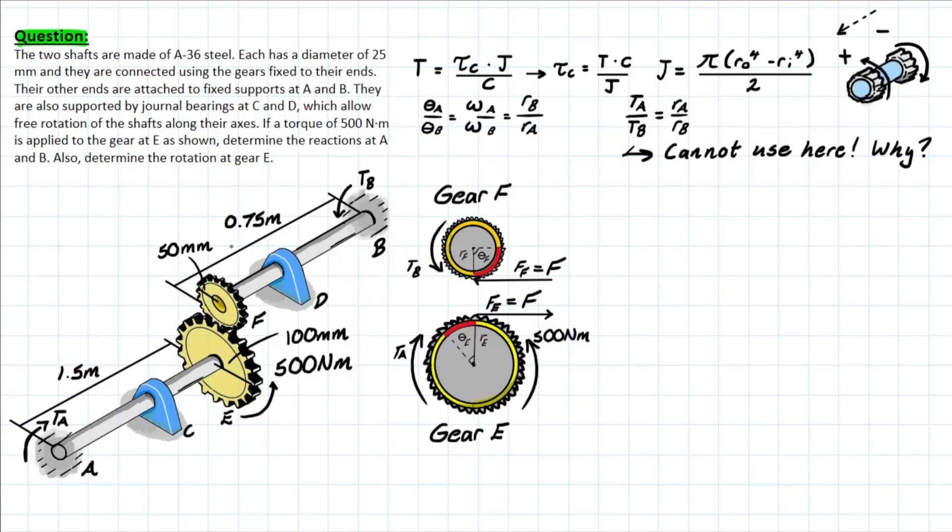Today, just dealing with the problem, we're going to get into theory when we're solving, and the problem goes as follows. We have two shafts which are made of A36 steel and each have a diameter of 25mm, and they're connected using gears fixed to their ends.